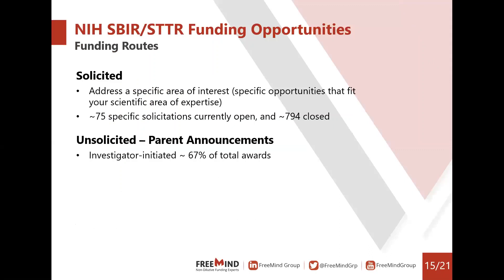In terms of NIH SBIR and STTR funding opportunities, there are two main routes. The first is the solicited approach, where you address a specific area of interest. There are specific opportunities that might be a great fit to your scientific area of expertise or the project you are proposing.